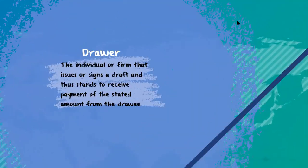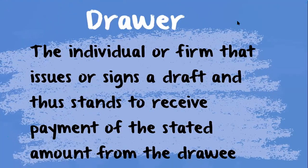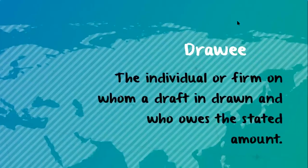The drawer is the individual or firm that issues or signs a draft and thus stands to receive payment of the stated amount. The drawee, however, is the individual or firm on whom a draft is drawn and who owes the stated amount.